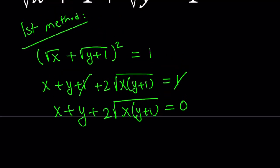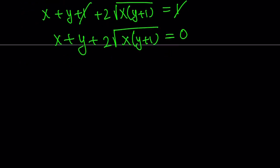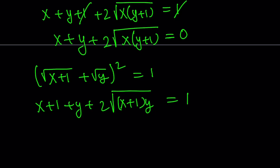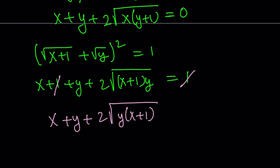I'll do the same thing for the second equation. Starting with the square root of (x+1) plus the square root of y, squaring both sides gives x plus 1 plus y plus 2 times the square root of (x+1) times y, and that equals 1. Again, the 1 cancels out, leaving x plus y plus 2 times the square root of y times (x+1) equals 0.